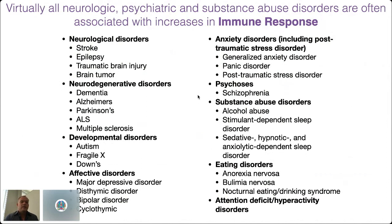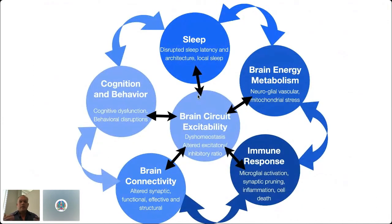The big question is: what is the relationship between all of these different disorders and these common observations of changes in cognition, behavior, sleep, brain energy metabolism, immune response, brain connectivity, and brain excitability? That's part of what I'll take you through today — at least one perspective on how these elements can relate.